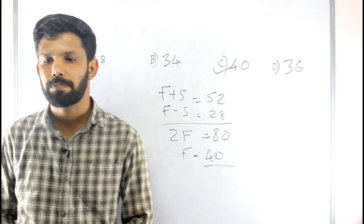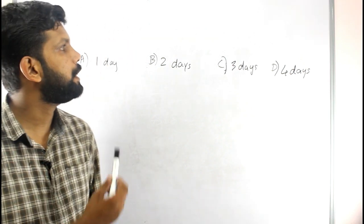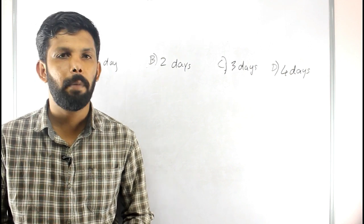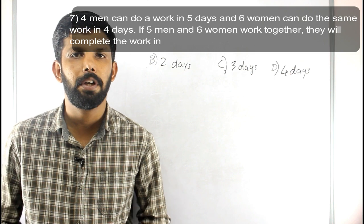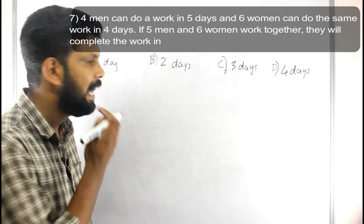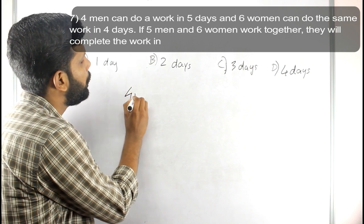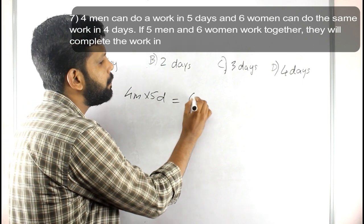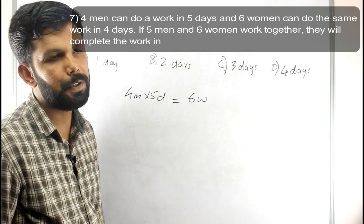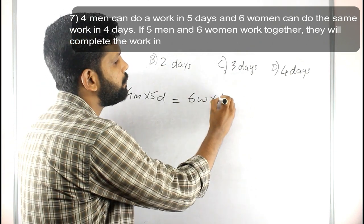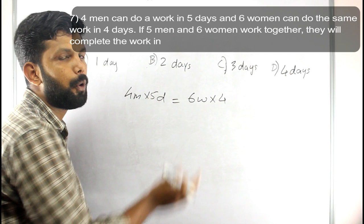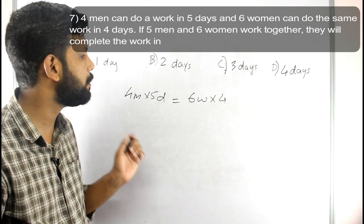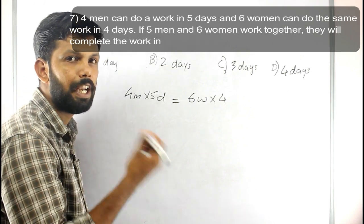The next question: 4 men can do a work in 5 days, and 6 women can do the same work in 4 days. If 5 men and 6 women work together, they will complete the work in how many days? Four men do the work in 5 days, and six women do the work in 4 days. M represents men and W represents women.